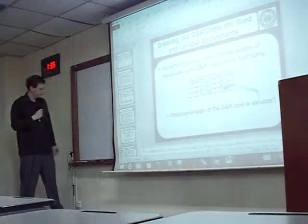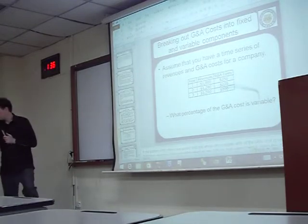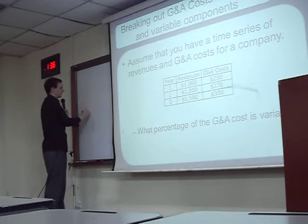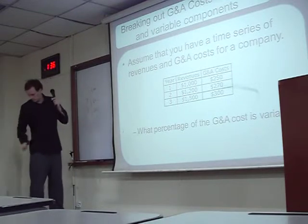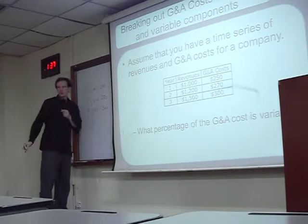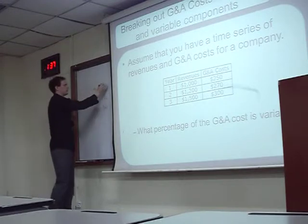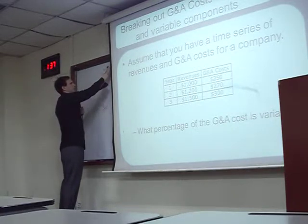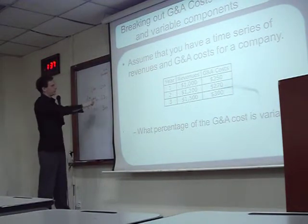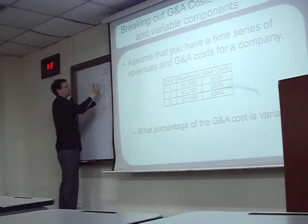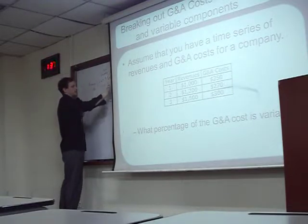So we can make a table here of the revenues and the general and administrative costs. Revenue is one thousand. General and administrative costs — we said it is fixed and variable. So what we're going to do is start from the end and work back. We said that we have 40% variable and 60% fixed — this was our answer in the end. So if we have 40% variable cost, this is the G&A, this is revenue, and we can split G&A up into variable and fixed.